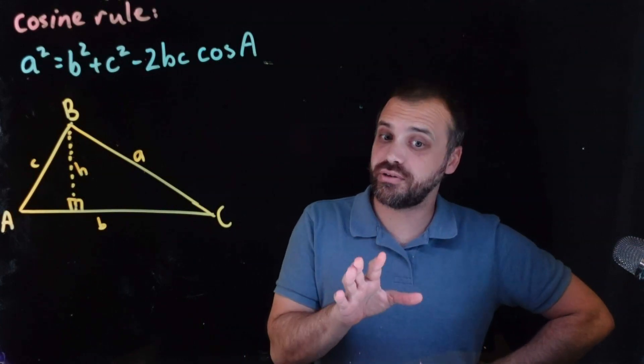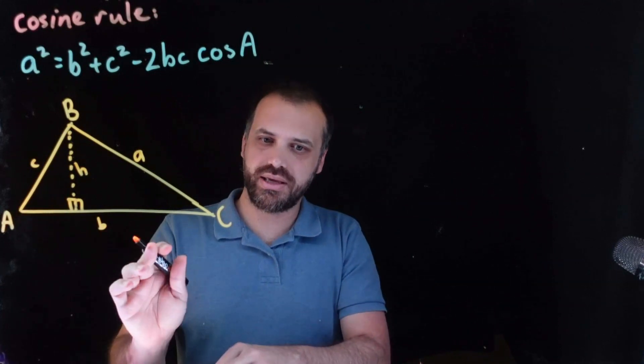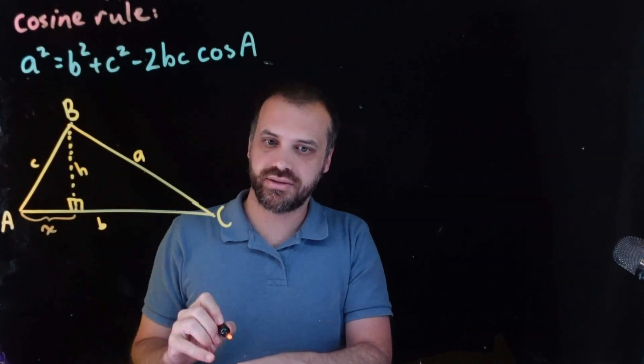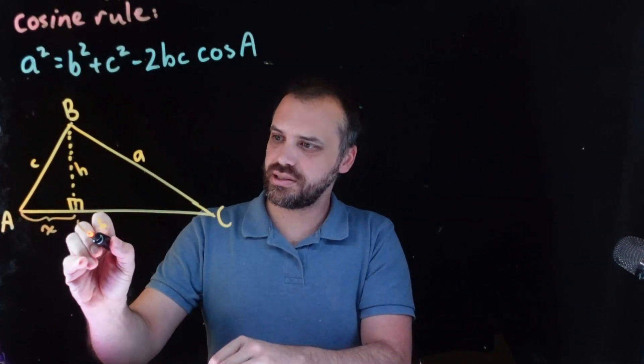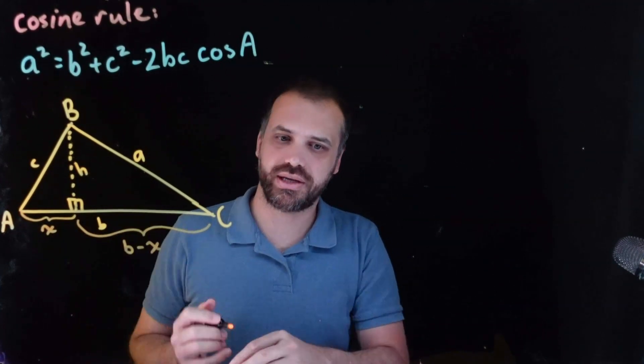Now, we can do something pretty clever. We can divide length B up into two different lengths. We can call this length here X. And if that's X, and that's B, then this length here would be B minus X.